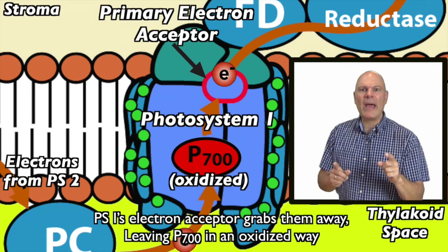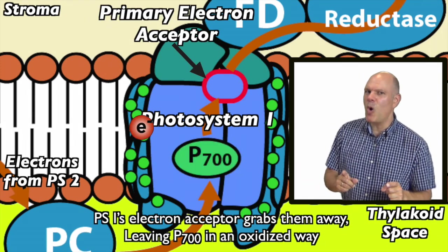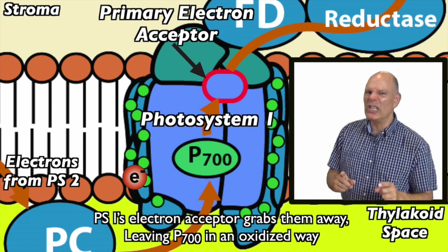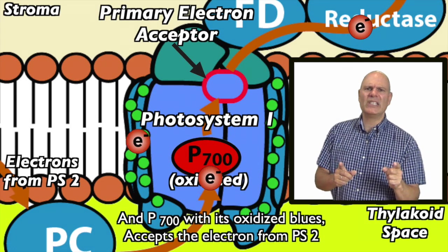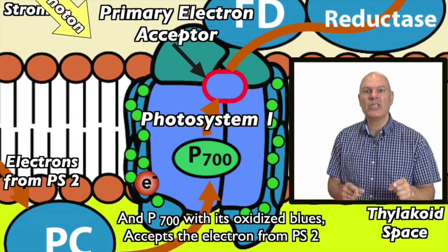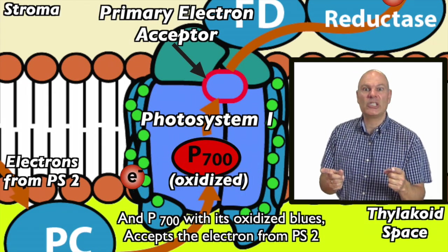PS1's electron acceptor grabs them away, leaving P700 in an oxidized way. And P700, with its oxidized blues, accepts the electron from PS2.